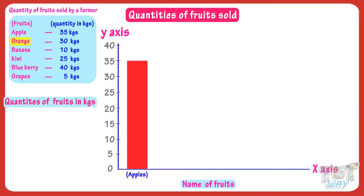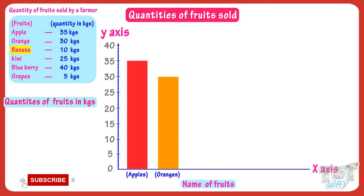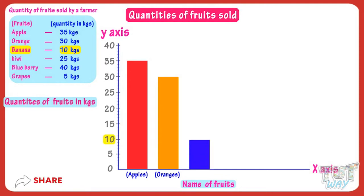Next fruit is orange. The quantity of oranges sold is 30 kgs, so make a rectangular bar up to the mark of 30 and label it with oranges. Next fruit is banana. The quantity of bananas sold is 10 kgs, so make a rectangular bar up to the mark of 10 and label it with banana.